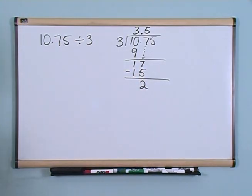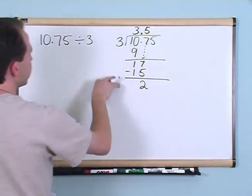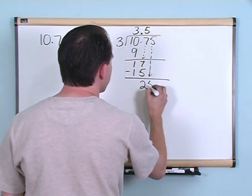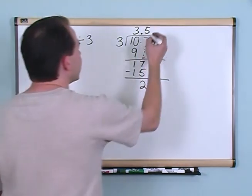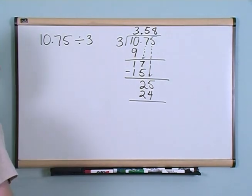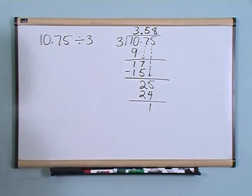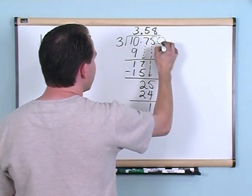17 minus 15 gives me 2. Can 3 go into 2? No. So I drag another digit down — the 5 — making it 25. Can 3 go into 25? Yes it can, 8 times, because 8 times 3 is 24. 25 minus 24 is 1. Can 3 go into 1? No, but I can add a 0 anytime I need to. Let me drag that 0 down and see what happens.